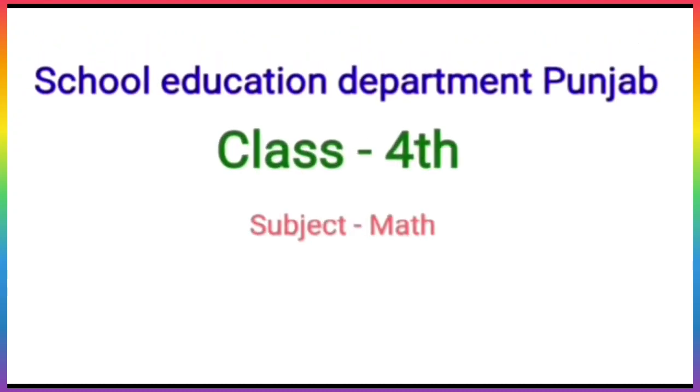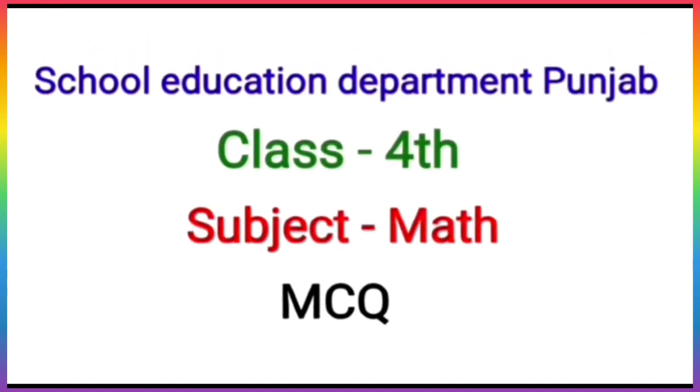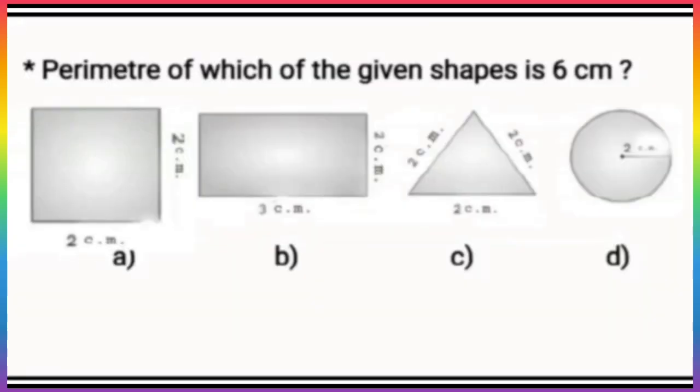Hello children, School Education Department Punjab presents E-class. Today we are going to discuss multiple choice questions. Children, the first question is: perimeter of which of the given shapes is 6 centimeters? Children, we already know that